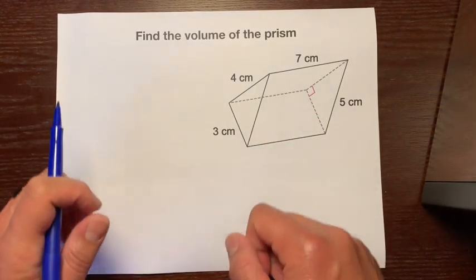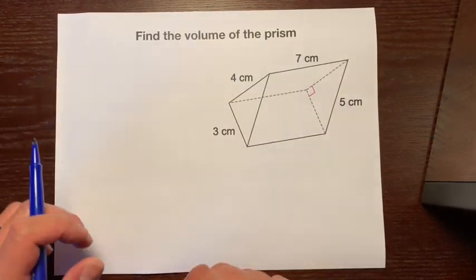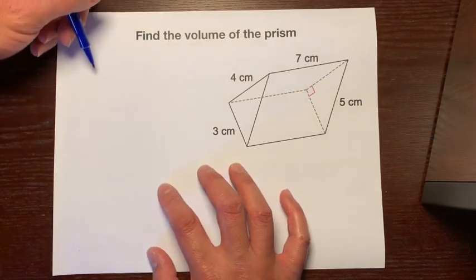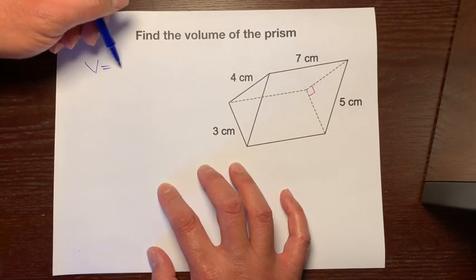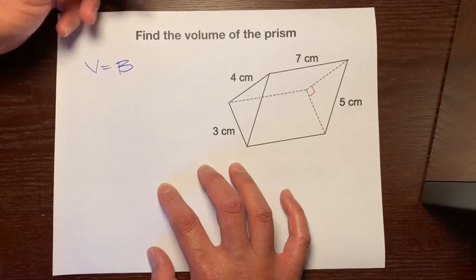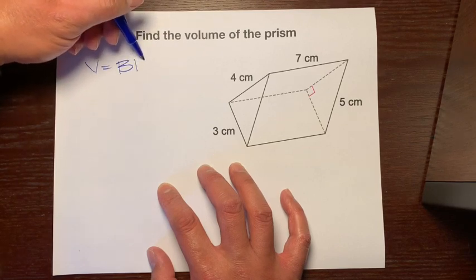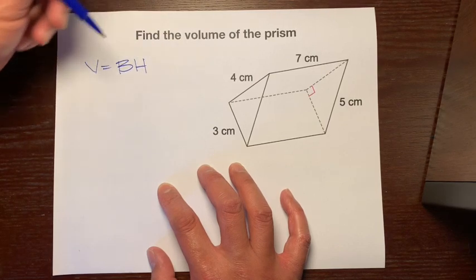So I'm going to give you guys a formula that works for all prisms. It is V equals base area times the distance between the two bases.